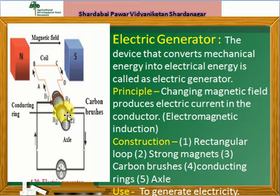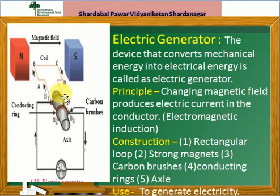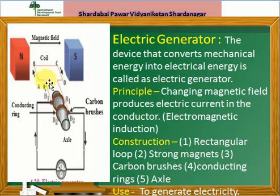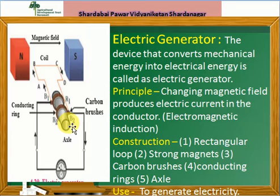बघाता इथे B2 brush आहे. D, C, B, आणि A असे loop तयार झाले. B2 brush तिथेच आहे, B1 brush इथे आहे. म्हणजे AB ही branch B1 ब्रशला attached आहे, आणि CD ही branch B2 ब्रशला attached आहे. आता हे rotation झाल्यामुळे A, B आणि C, D यांनी आपले position change केले.